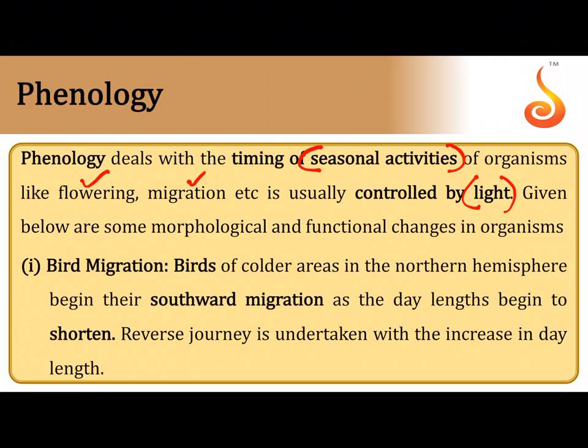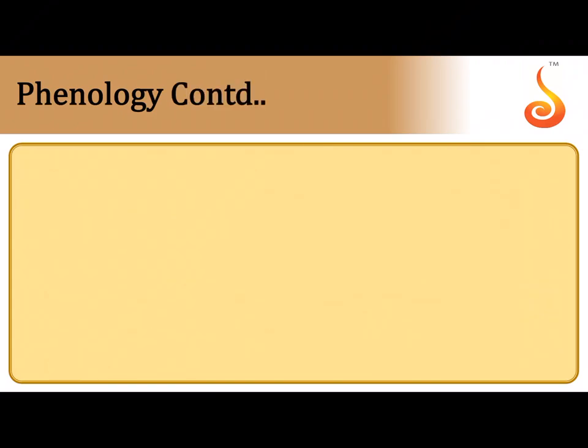Phenology refers to when an organism times its activity according to the cycles of fluctuations of light happening in the surrounding environment. For example, birds in the northern hemisphere start migrating when days start becoming shorter — getting an idea that winter is coming, they migrate to the southern hemisphere and modify their migratory habits and seasonal activities depending upon changes in light intensity.